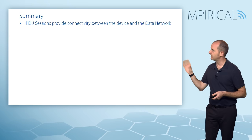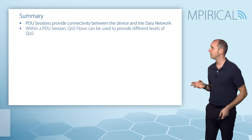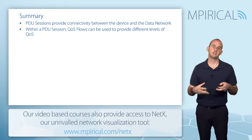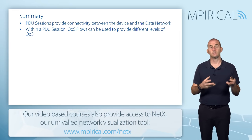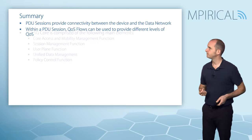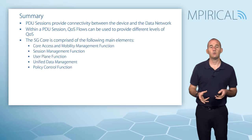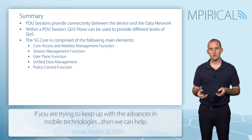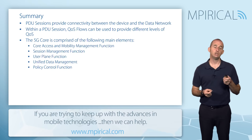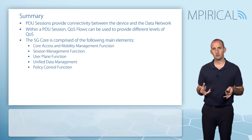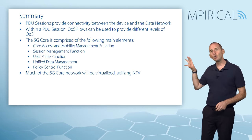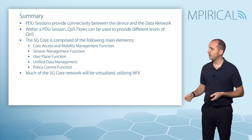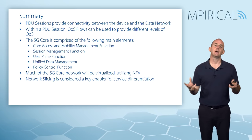In summary, we covered PDU sessions, which provide connectivity between the device and the data network. Within a PDU session, QoS flows provide specific levels of quality of service for specific types of data. We discussed five key 5G core network elements: the Core Access and Mobility Management Function, the Session Management Function, the User Plane Function, the Unified Data Management, and the Policy Control Function. All of these elements will fundamentally be virtualized, and a key benefit of virtualization is that it opens the network up to network slicing.